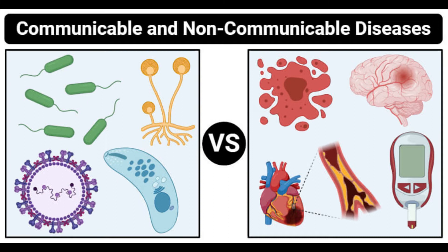Regarding cause, pathogenic microorganisms are the primary cause of communicable diseases. Non-communicable diseases are caused by nutrition deficiency, hormonal deficiency, or abnormal proliferation of cells. Regarding inheritance, communicable diseases cannot be inherited from one generation to another, while non-communicable diseases might be inherited from one generation to another. Viruses, fungi, and bacteria act as agents or vectors for communicable diseases, whereas non-communicable diseases have no agents and primarily depend on personal diet, allergy, or physical inactivity.